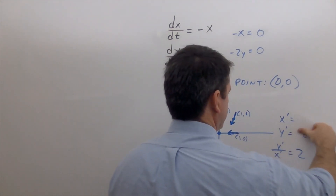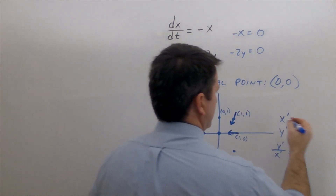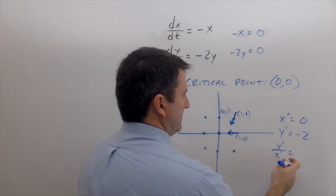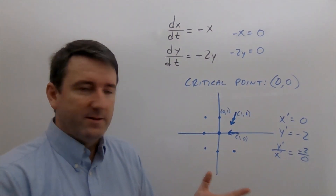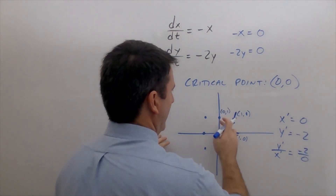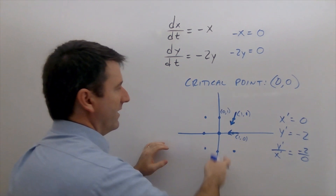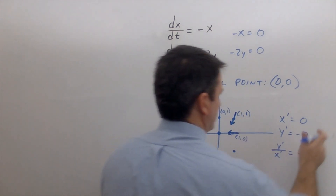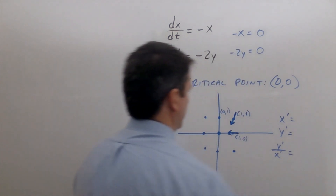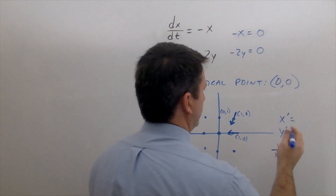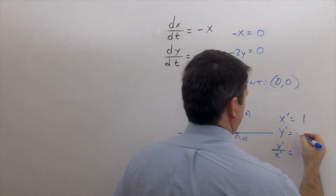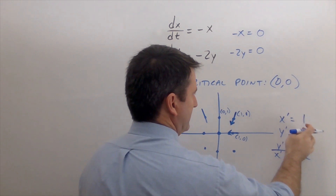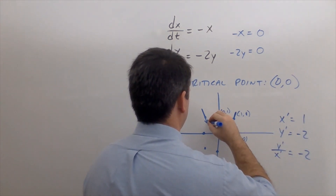At the point (0, 1): x is zero so the change in x is zero, and y is 1 so the change in y is negative 2. The slope would be negative 2 over zero, which is undefined, so we won't draw an arrow on the y-axis there. At the point (-1, 1): plugging in negative 1 for x gives 1, and negative 2 for y prime, so the slope is negative 2, going to the right and down.